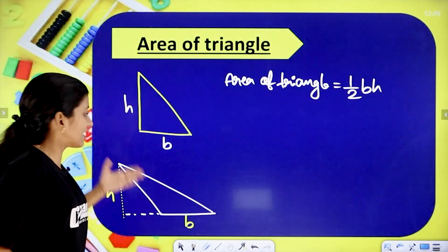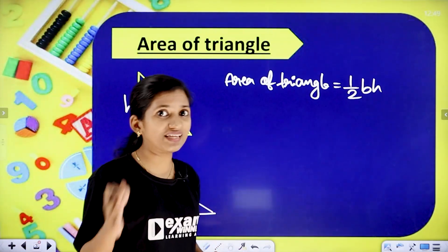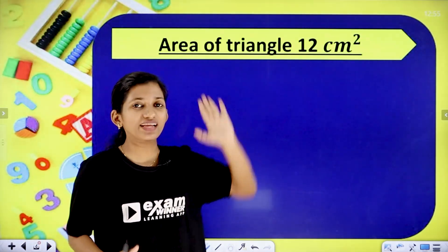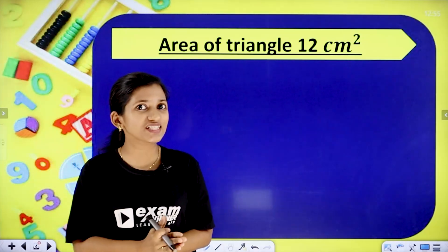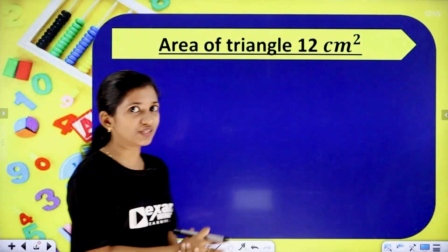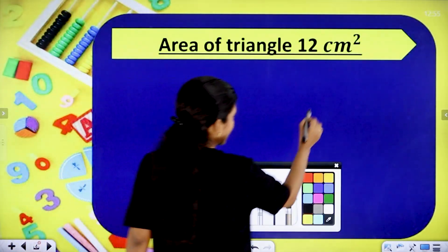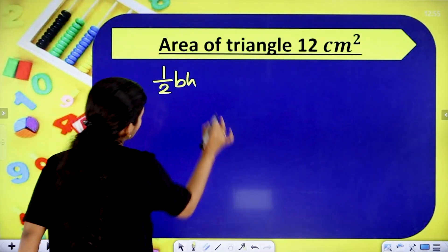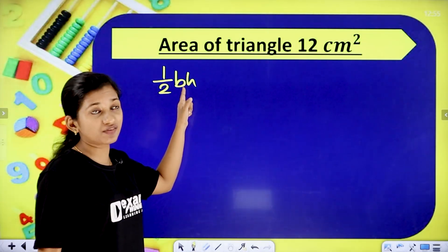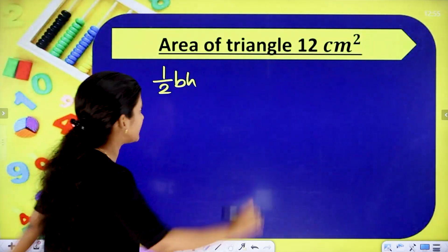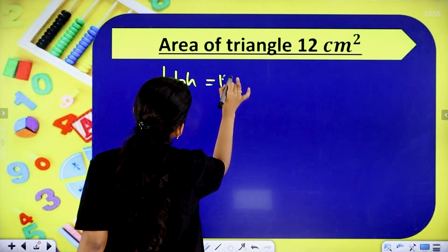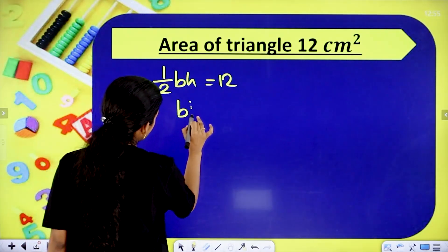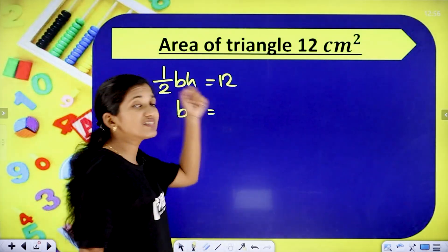This is the equation: area of triangle equals half times B. We have two different triangles with the same area. Now let's look at a square of 12 cm². The equation is: area of triangle equals half times base times height. The area of the triangle is 12 cm².